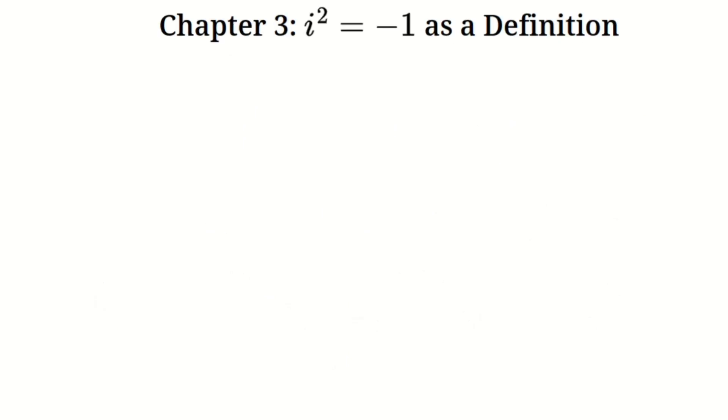Chapter three, i squared equals negative one as a definition. Here's the key insight. i squared equals negative one isn't something we prove. It's a definition. It's not a result of applying rules. It's a starting point. We introduce i specifically to solve equations like x squared plus one equals zero. So while i squared equals negative one is valid, it avoids addressing deeper ambiguities in the system.